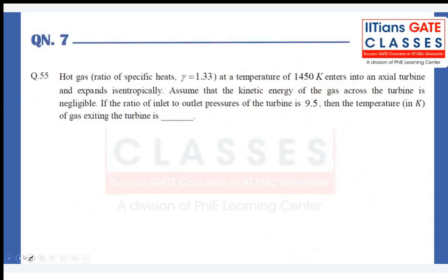Hot gas with ratio of specific heat 1.33 at a temperature of 1450 Kelvin enters an axial turbine and expands isentropically. Assume the kinetic energy of the gas across the turbine is negligible. If the ratio of inlet to outlet pressure of the turbine is 9.5, find the temperature in Kelvin of the gas exiting the turbine. Most of the questions this year are framed around TS diagrams — if you understand the TS diagram, you can crack many of them easily. The keyword here is 'expands isentropically,' meaning the efficiency of the turbine is 100%.